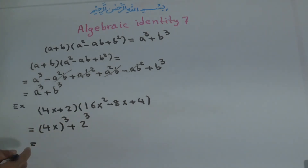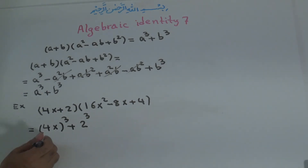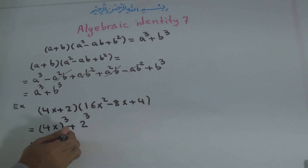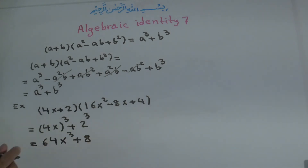Now, to the power of 3 means 4 times 4 times 4: 4 times 4 is 16, and 16 times 4 is 64. So we get 64 times x to the power of 3. Plus 2 to the power of 3 means 2 times 2 times 2: 2 times 2 is 4, and 4 times 2 is 8. The answer is 64x to the power of 3 plus 8.